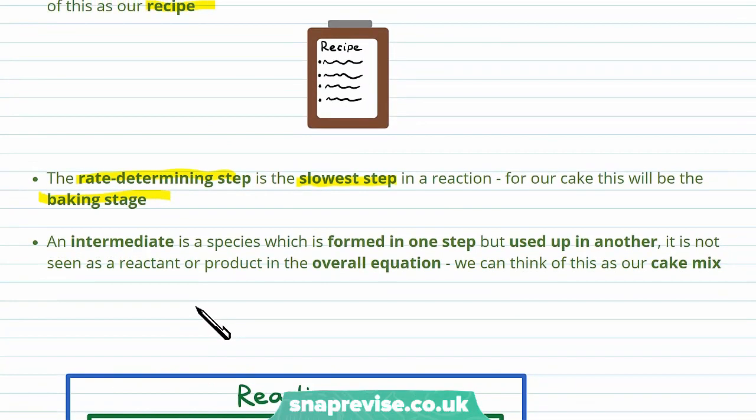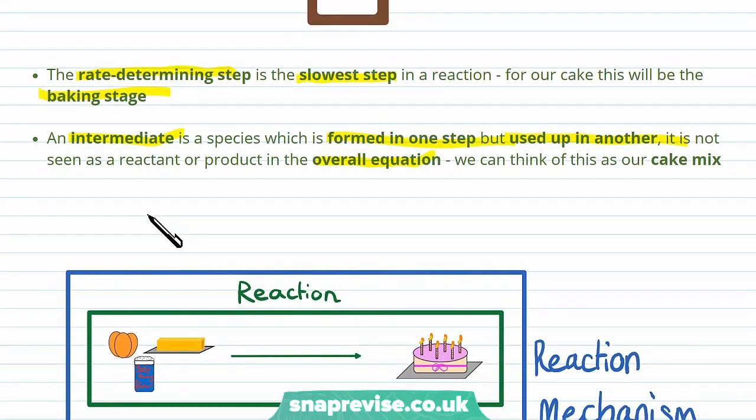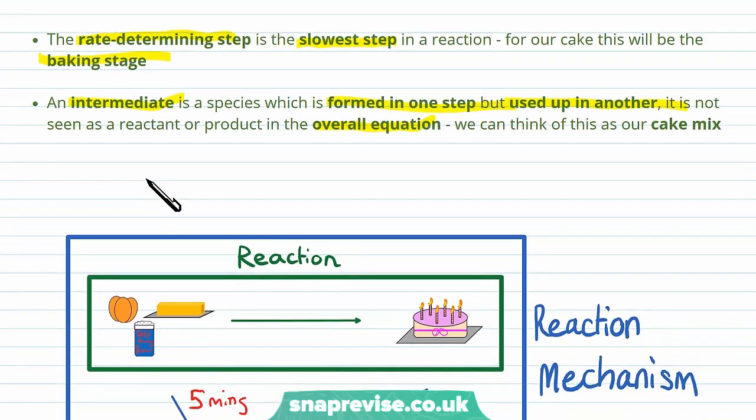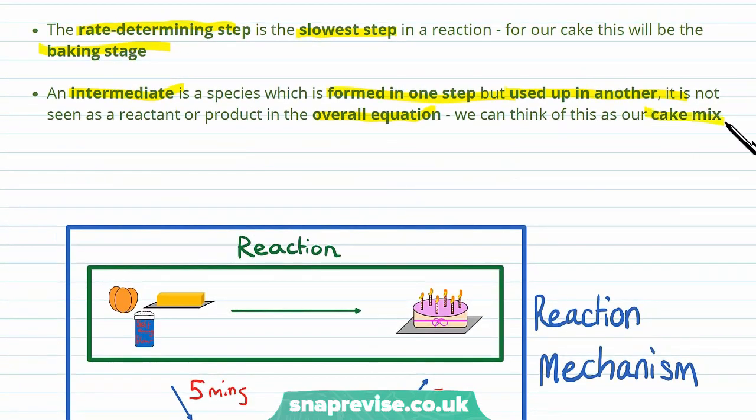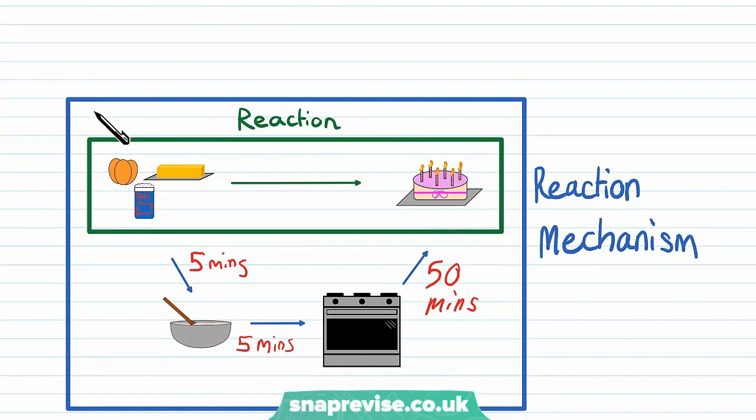The final term we need to get used to for today is the term intermediate. An intermediate is a species which is formed in one step and used up in another. It's not seen as a reactant in the overall reaction equation or a product. We've got our set of ingredients and our cake, but at one point in the reaction, we'll have the cake mix. That's something we didn't start with and we don't end with. It's made from the reactants but then used up again and forms something else later in the reaction. That is what we're going to call an intermediate for today.